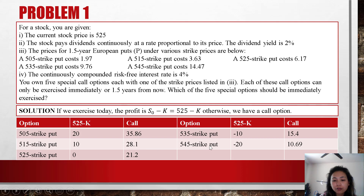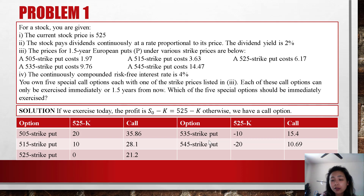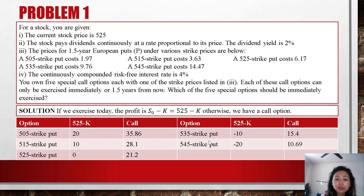Similarly, for the 535-strike put, the profit today is negative 10 (since 525 minus 535 is −10), so we actually lose $10 if we exercise today. But if we exercise a year and a half later, we get $15.40. So we should exercise later. And for the last option we should also exercise later. Therefore, the answer is none of these 5 special options should be immediately exercised — all of them should be exercised a year and a half later in order to gain profit.